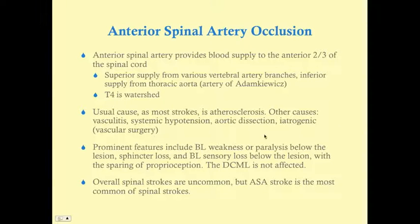Prominent features of anterior spinal artery occlusion include bilateral weakness or paralysis below the level of the lesion, loss of sphincter tone, and bilateral sensory loss below the lesion with sparing of proprioception — the DCML is not affected. Overall, spinal strokes are uncommon, but ASA stroke is the most common among them. The key teaching point is that you lose spinothalamic and corticospinal pathways, but the DCML is spared.